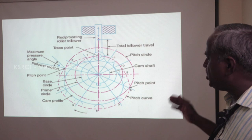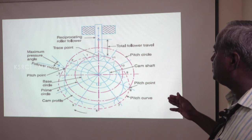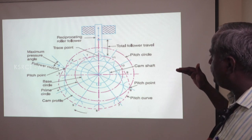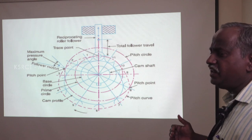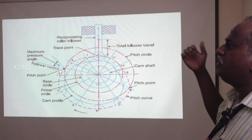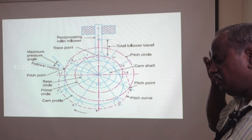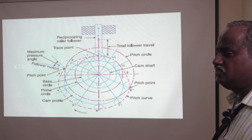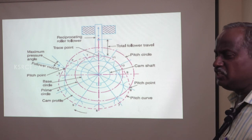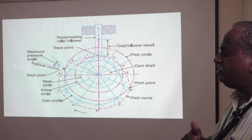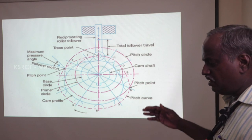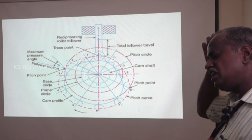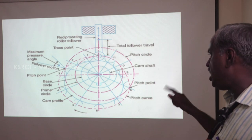Whenever there is a change in the radius distance from the base circle to the outermost point — the stroke length — the follower either lifts or lowers. When it is getting lifted, a certain mechanism will be activated. In the textile machinery, the profile of the CAM will have a sharp edge because it has to strike the striker of the shuttle, so that the shuttle moves quickly from one end to another end. In that case, the shape of the CAM will be something like a sharp edge.